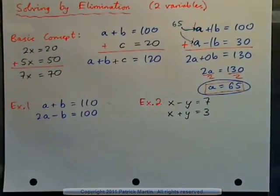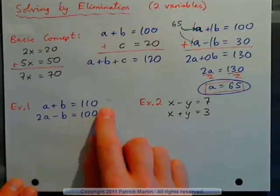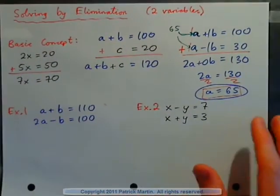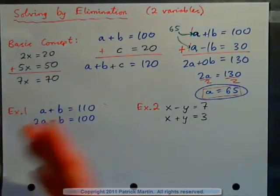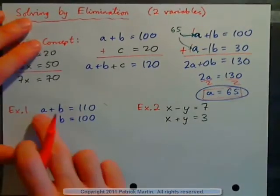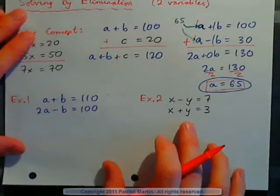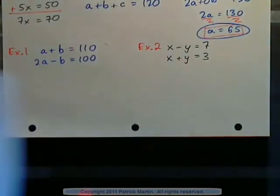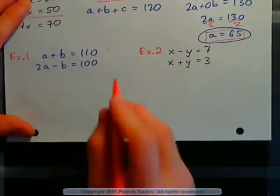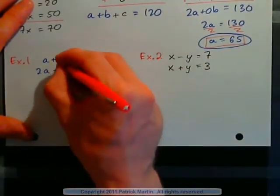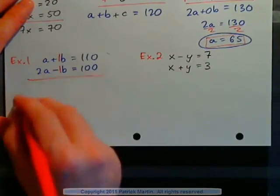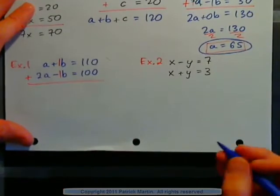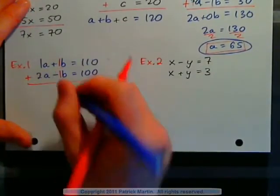Let's look at Example 1. Apple plus banana equals 110. Two apples minus a banana leaves us with 100 cents. We're looking for the price of the apple and the banana. Seeing that I have plus 1B and minus 1B in these equations, I'm going to choose to solve this by elimination — by adding the equations together — because the B's will eliminate. They will disappear, becoming 0B, which is 0.